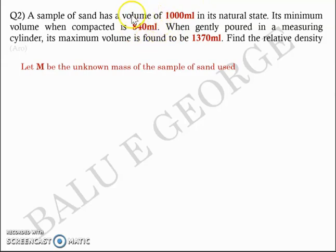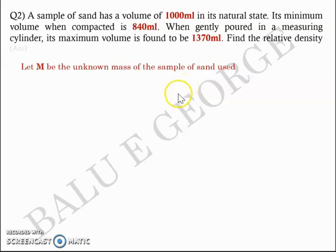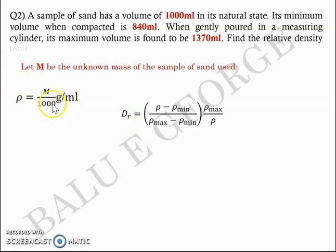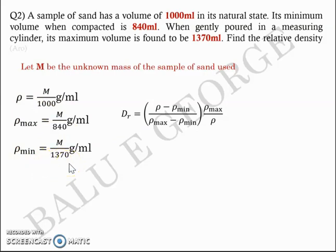The same mass M occupied in the least volume gives the maximum density, and the same mass occupied in the maximum volume gives the loosest density. So the equation for relative density or density index Dr is: (ρ − ρ_min) / (ρ_max − ρ_min) × (ρ_max / ρ), where ρ = M/1000, ρ_min = M/1370, and ρ_max = M/840.